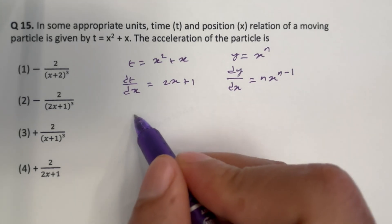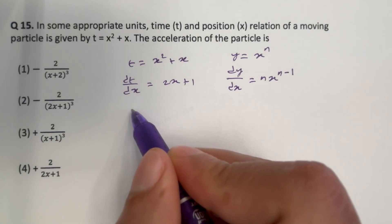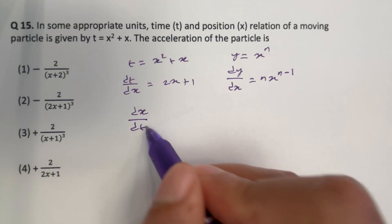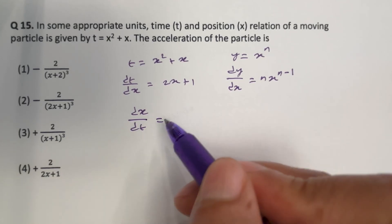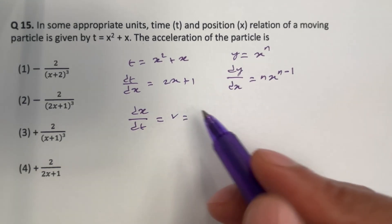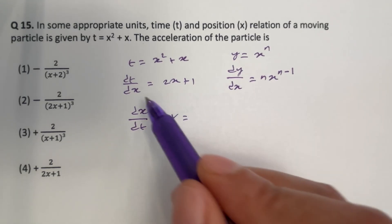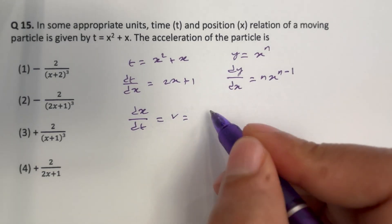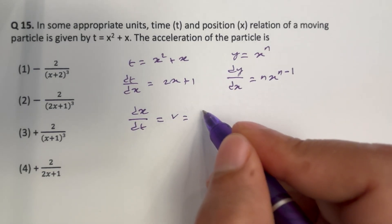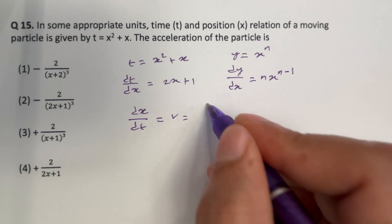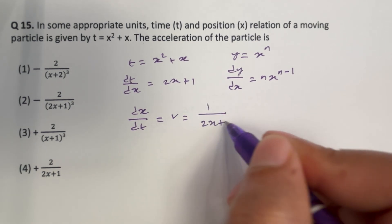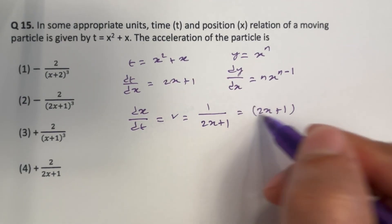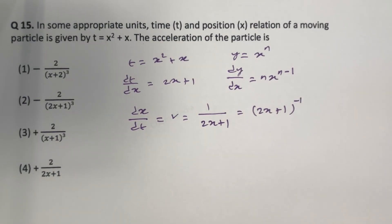Now, we know that velocity is rate of change of distance with respect to unit time, that is equal to v. Therefore, velocity is the reciprocal of dt by dx. Therefore, we can write that v is equal to 1 by (2x plus 1), and that is equal to (2x plus 1) to the whole power minus 1.